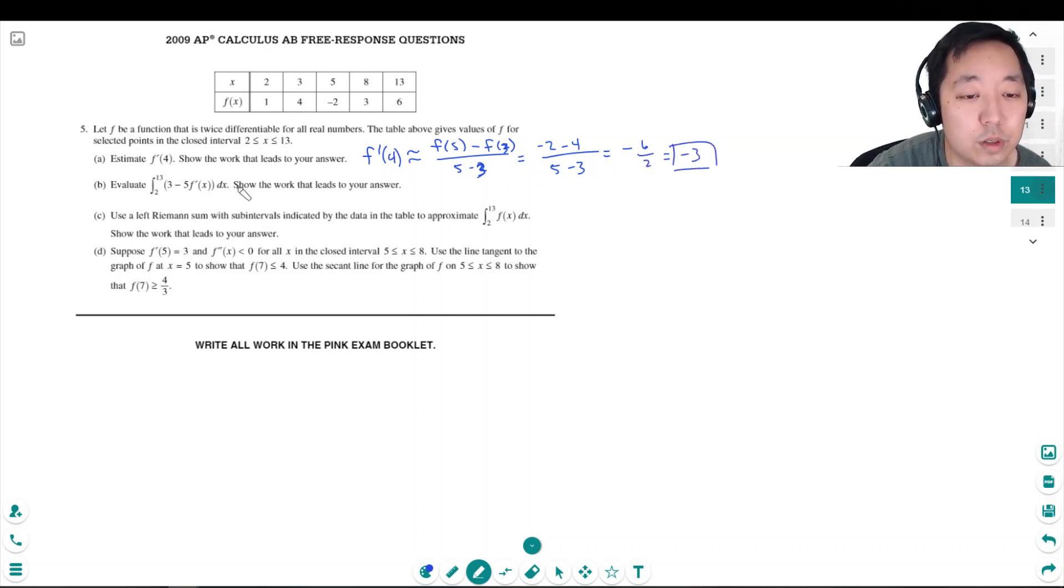Evaluate this integral and show the work that leads to your answer. The integral from 2 to 13 of 3 minus 5 f prime of x. It's interesting how the problems change over the years. That's from 2 to 13, 3 dx minus 5 integral 2 to 13 f prime of x dx.